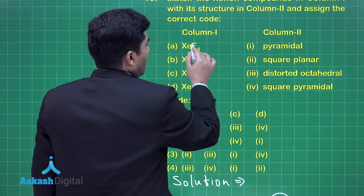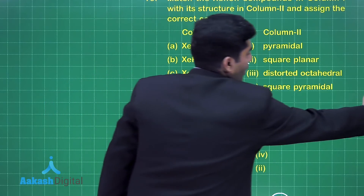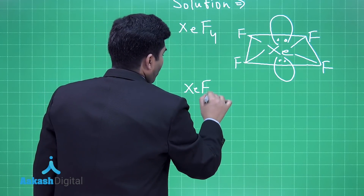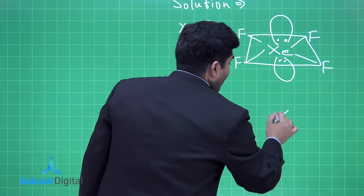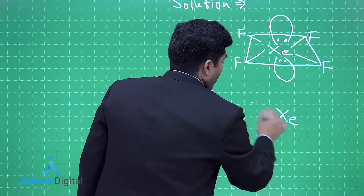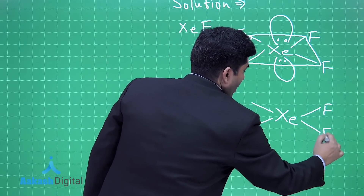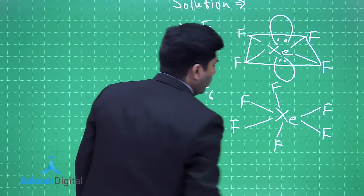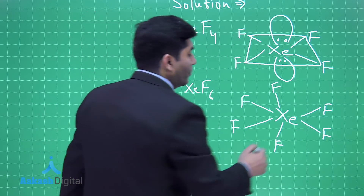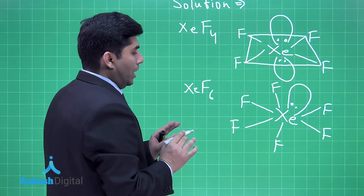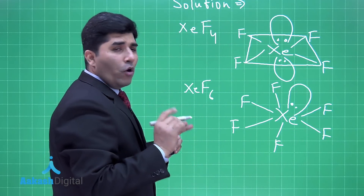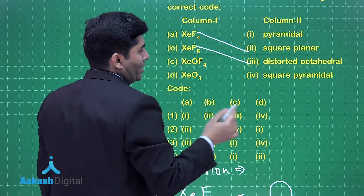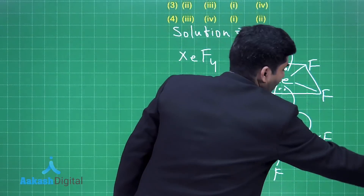Now let's talk about XeF6. Xenon has eight electrons. Four electrons participate in bonding with fluorine here, and one here and one here — a total of six bonds are formed, but still one lone pair is left. That lone pair distorts the shape, making it distorted octahedral. So XeF6 has a distorted octahedral shape.